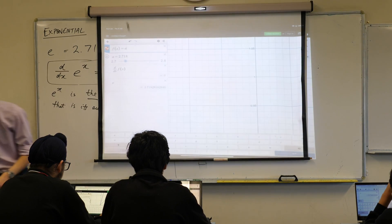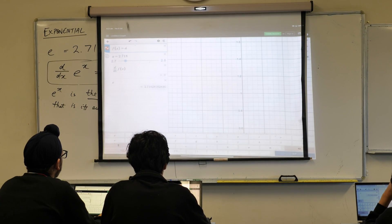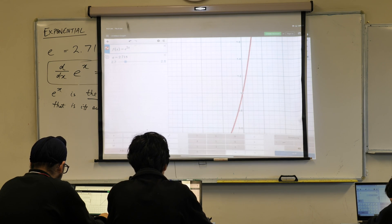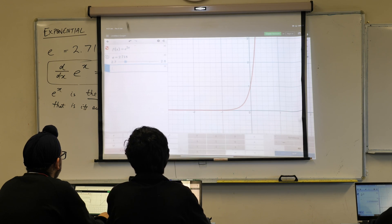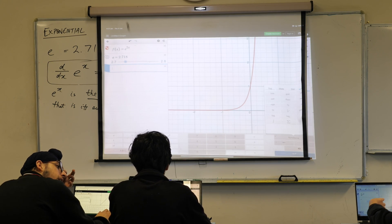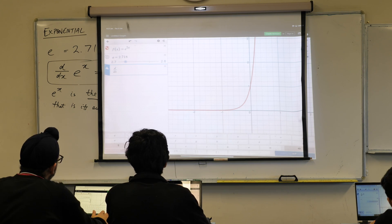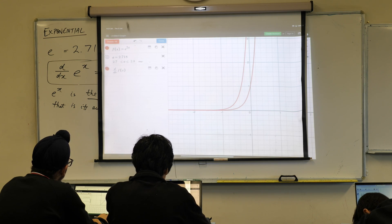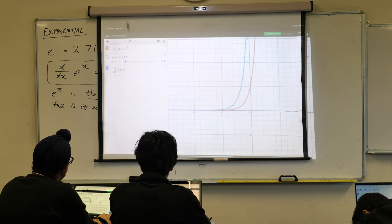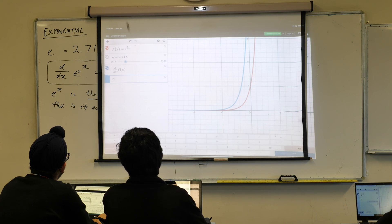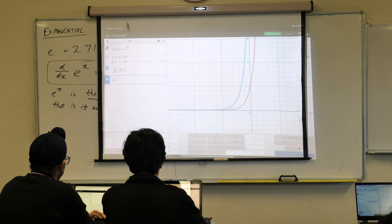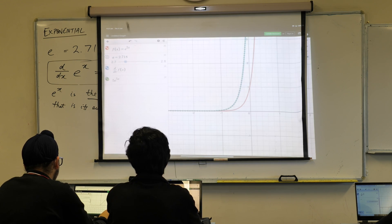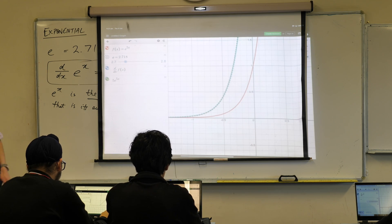You might have a lot of graphs there. You may need to clean that up a little bit. So it was e to the 5x, e to the power of 5x.